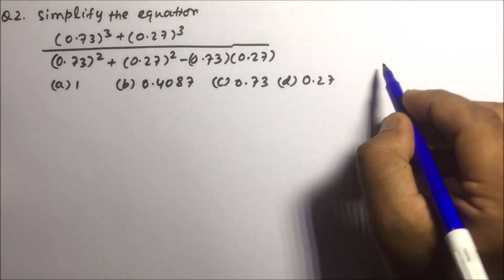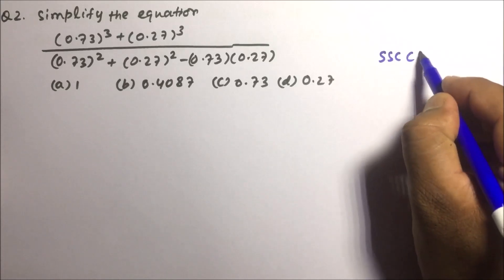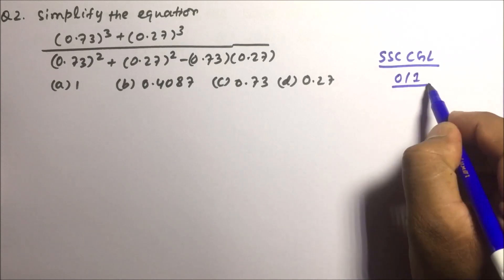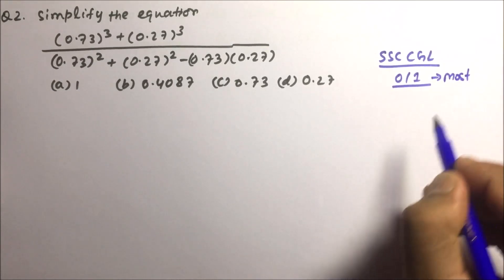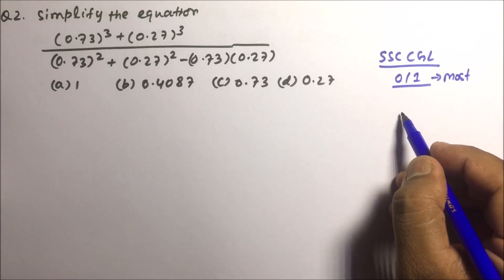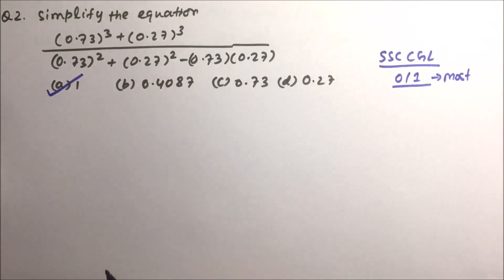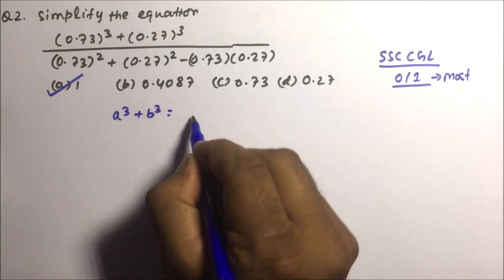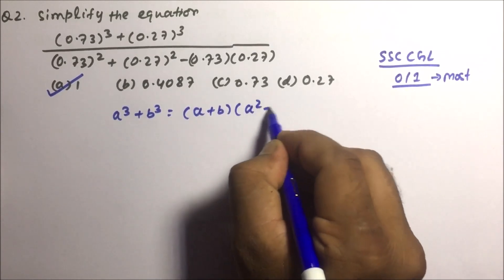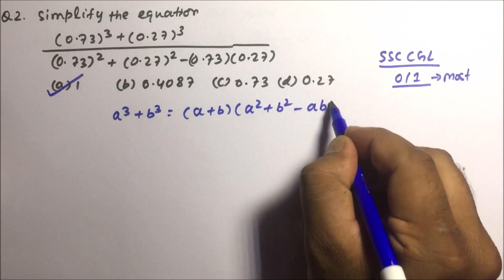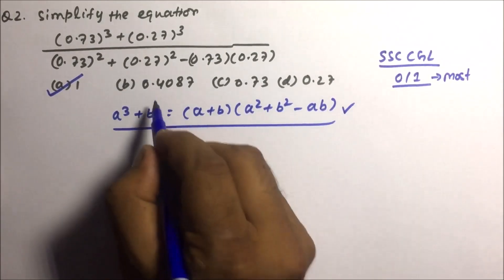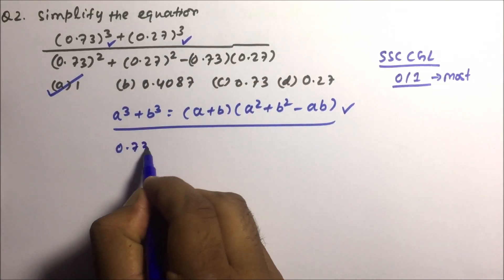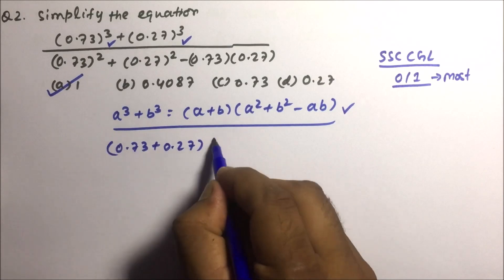Moving towards question number two, which has been asked many times in the SSC CGL exam. For this kind of problem the answer will be either zero or one in most cases — so in the exam if you're stuck, you can guess. The formula we use is: a³ + b³ = (a + b)(a² + b² − ab). This question will be solved using this formula only.